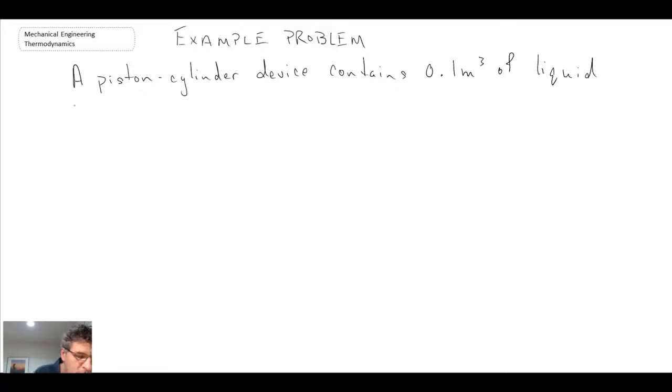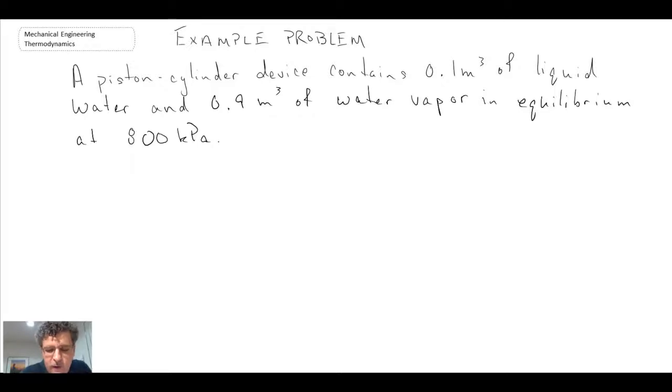So what we're going to consider is a piston cylinder device. So this is an example problem. We have a piston cylinder device that contains 0.1 meters cubed of liquid water and 0.9 meters cubed of water vapor in equilibrium at 800 kPa.